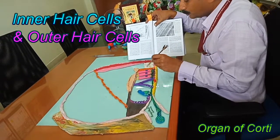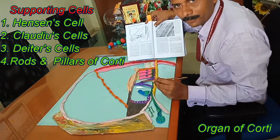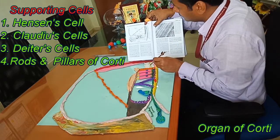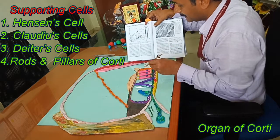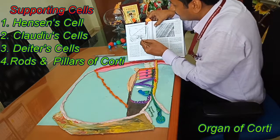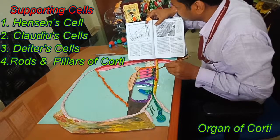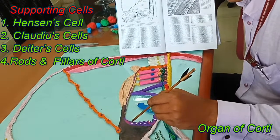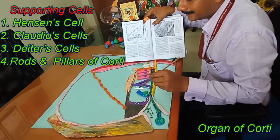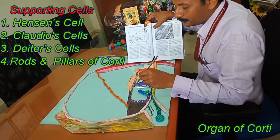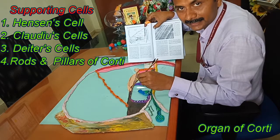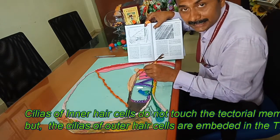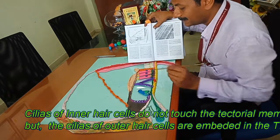There are four varieties of supporting cells: the Claudius cells in white, the Hensen's cells in orange, the Deiters cells in grey, and other supporting cells that support all the inner hair cells. As we can see, the inner hair cells do not touch the tectorial membrane, while the kinocilia of the outer hair cells are embedded inside the tectorial membrane.